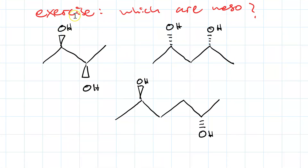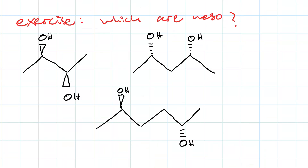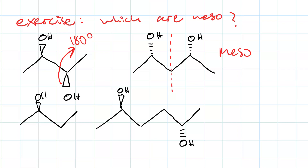I've drawn you some more molecules here. For an exercise, decide which of these are meso. Pause and circle the ones that are meso, then resume to see the answers. So, this molecule you can see has a mirror plane without doing any rotations — so this one is definitely meso. If we do a 180-degree rotation on the next one, we get this, and you can see that there is no mirror plane there. So this is not meso.